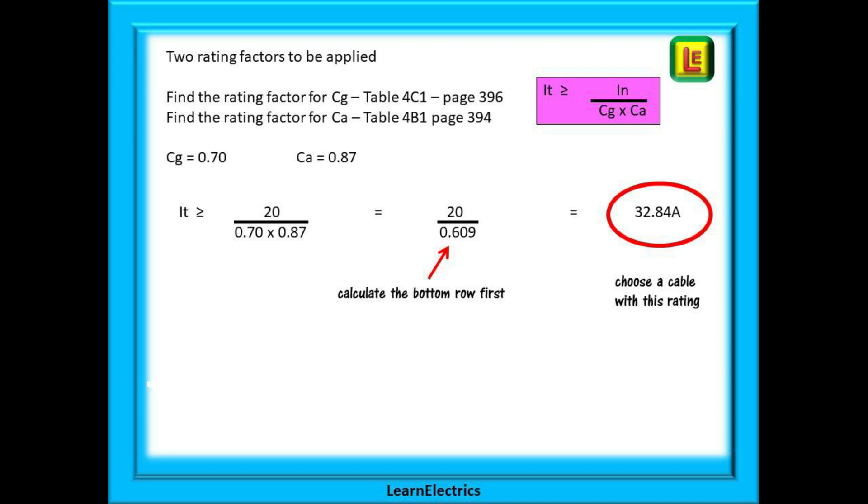Look on page 373. Find the rating factor for CG table 4C1 on page 396 which is 0.70. Find the rating factor for CA table 4B1 page 394 and this is 0.87. And work these two out first. Multiply 0.70 by 0.87 and we have a new number 0.609 for the bottom row. Now divide the breaker size 20 amps by 0.609 to give us 32.84 amps. The cable we should choose must be able to take 32.84 amps or more in normal conditions.